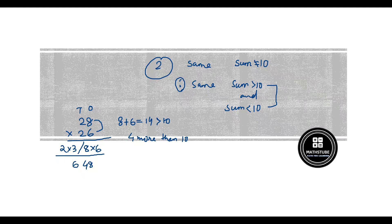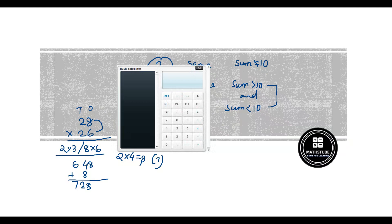This is not our final answer yet — we added because the sum was more than 10. Let's check: 28 into 26. The answer is 728. It's correct — you can check on your phone.